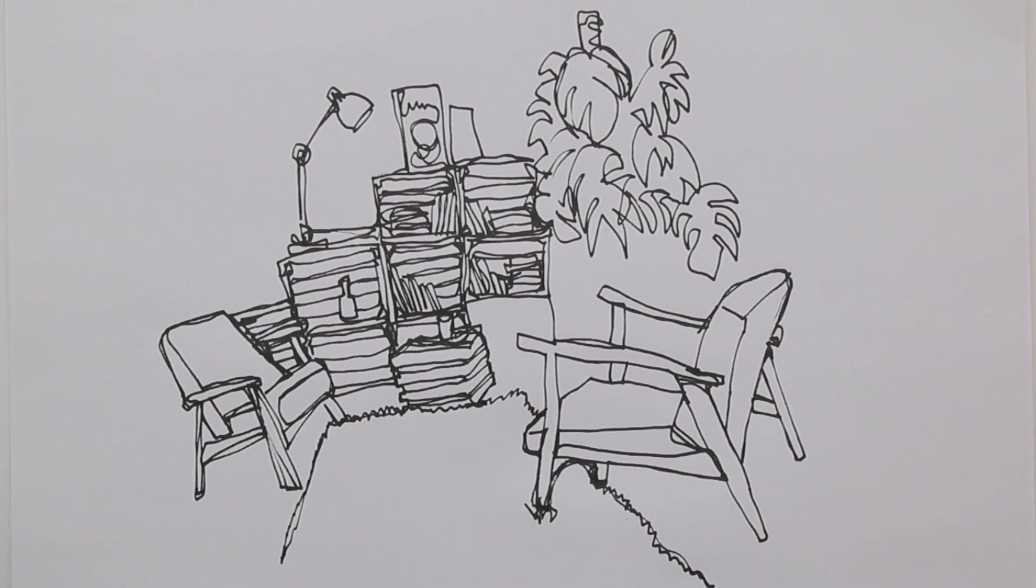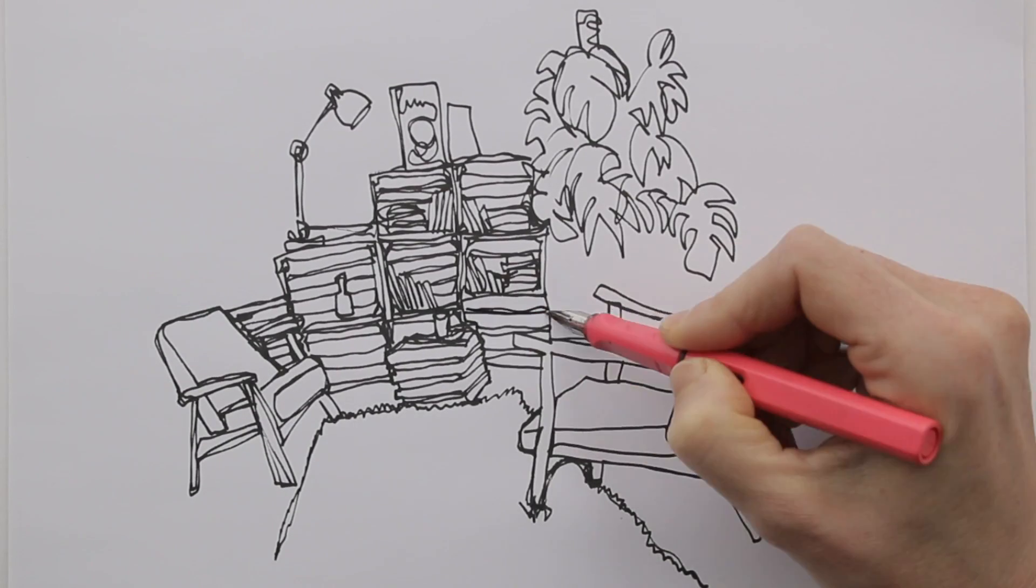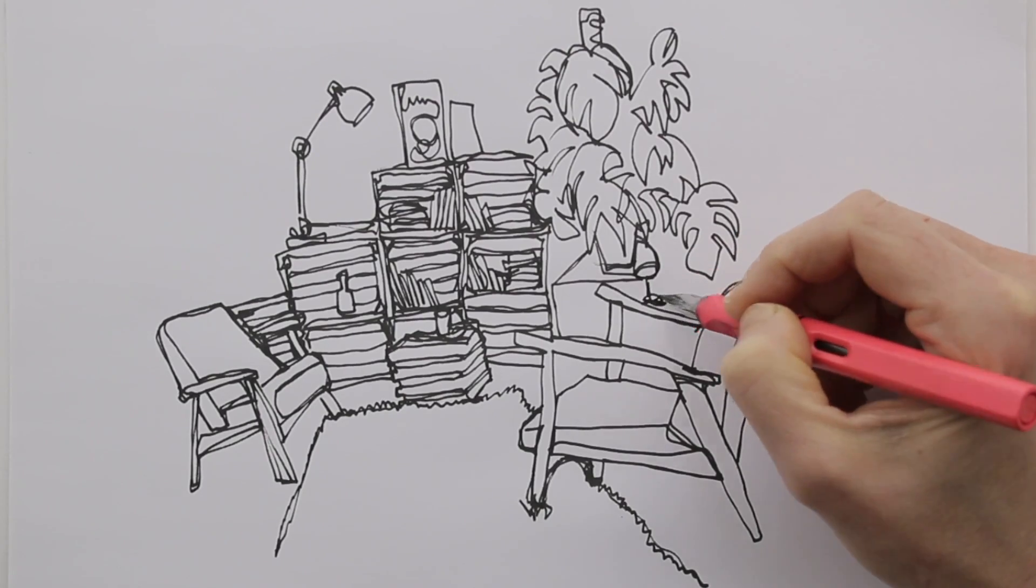When you think you're done, you may notice you missed some stuff. That's okay, you can start a second continual line. Instead of a one-liner, this then becomes a two-liner.